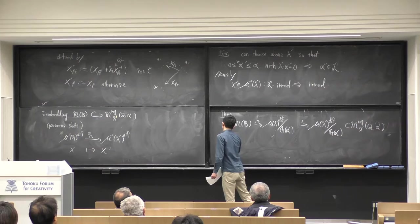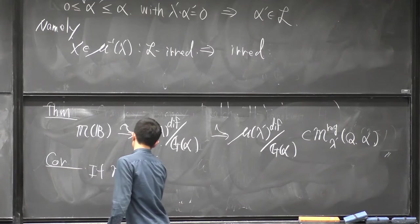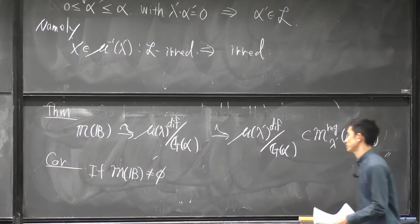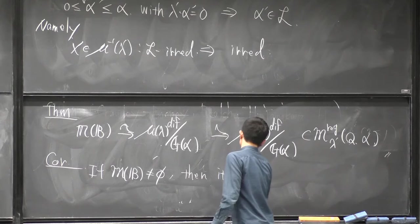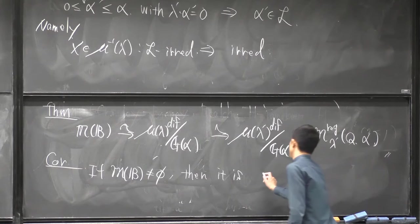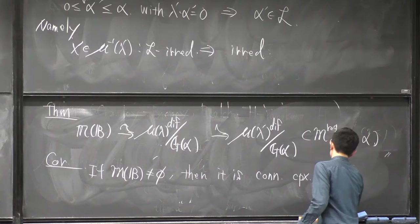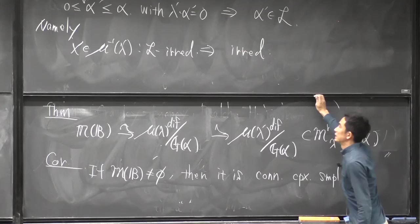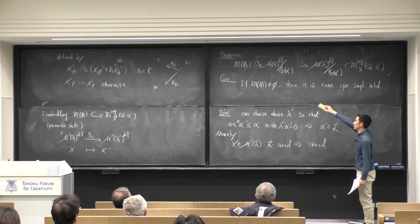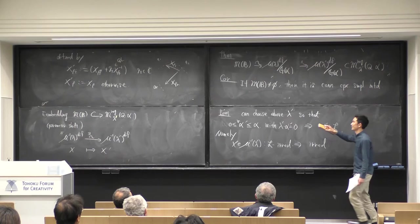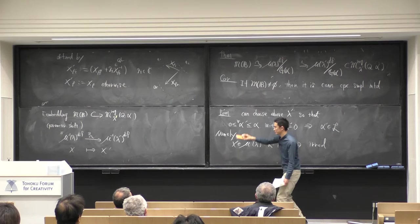So after taking such a parameter shift, we get the open embedding into the usual quiver variety. We can obtain geometric properties of this moduli space because the quiver variety enjoys a very rich geometric structure — for instance, it is a smooth connected complex manifold with symplectic structure. But we still have to show non-emptiness.